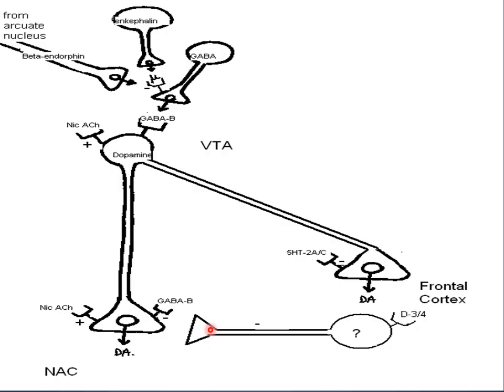Imagine these dopaminergic neurons having different projections to different parts of the brain. This first projection heading down toward the nucleus accumbens is where we're seeing a lot of the dopamine hyperactivity — this is where we're probably seeing a lot of the positive symptoms. What are some examples of positive symptoms? Hallucinations, delusions — patients get more visual or auditory hallucinations, depending on the patient.